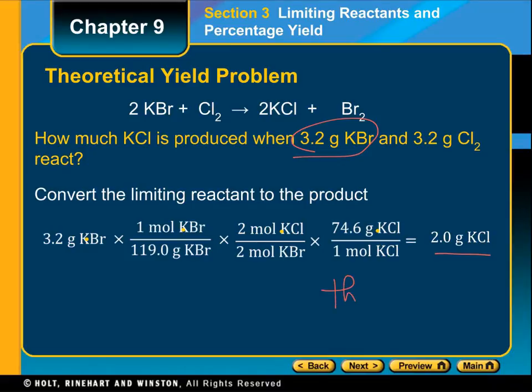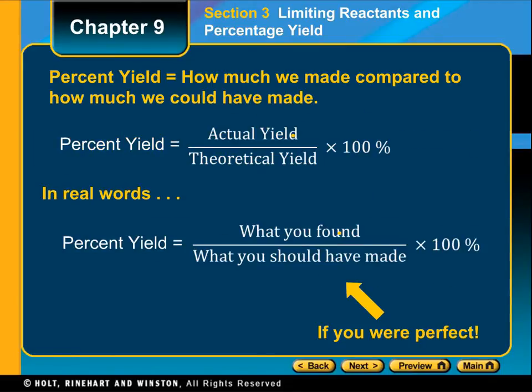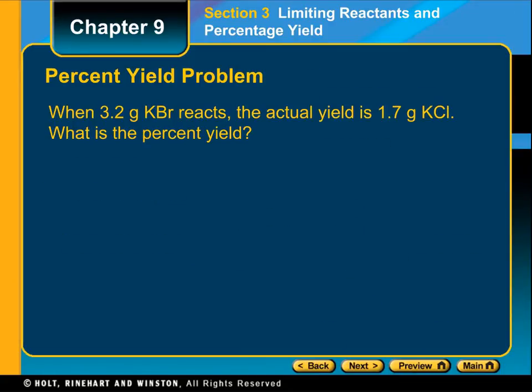As I mentioned, this is our theoretical yield, and we are going to compare it with the actual amount that we make. Here is how you actually convert and find the percent yield: you take the actual yield divided by the theoretical yield times 100, and then you have the percent yield.